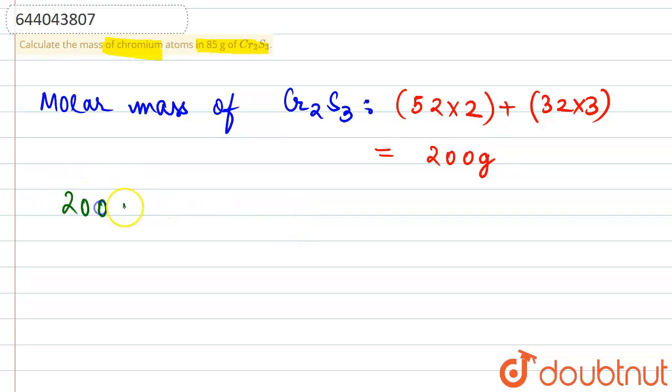Therefore, we can say that 200 grams of chromium sulfite contains how much mass of chromium? That is 52 × 2 grams of chromium, which equals 104 grams of chromium. We have to find for 85 grams.